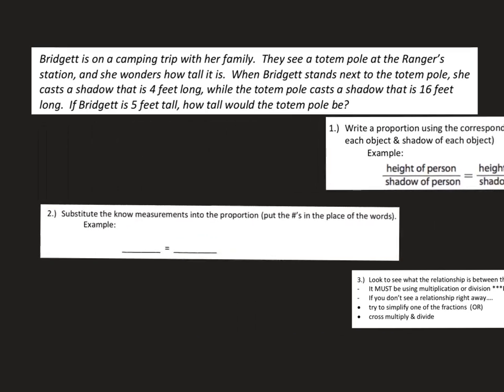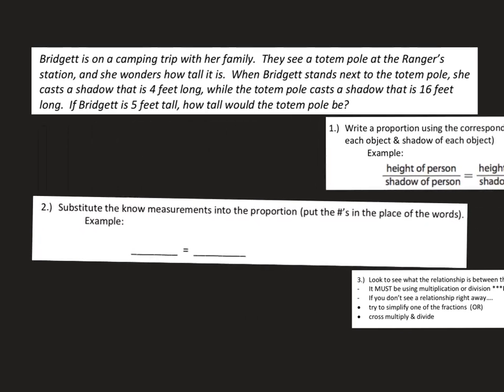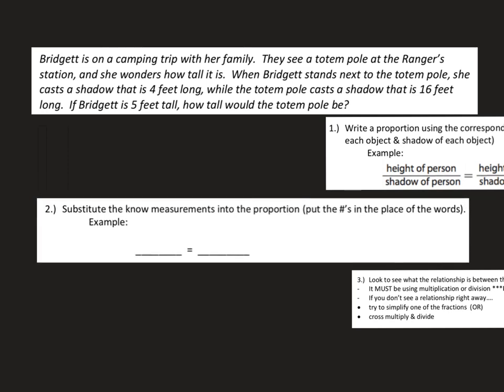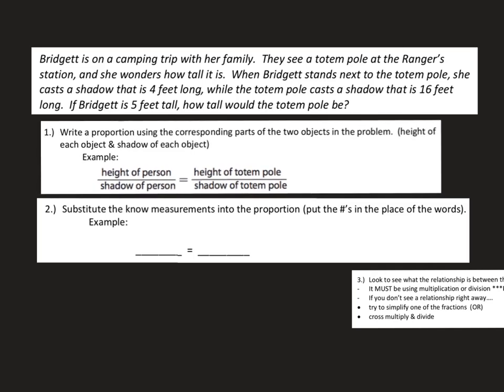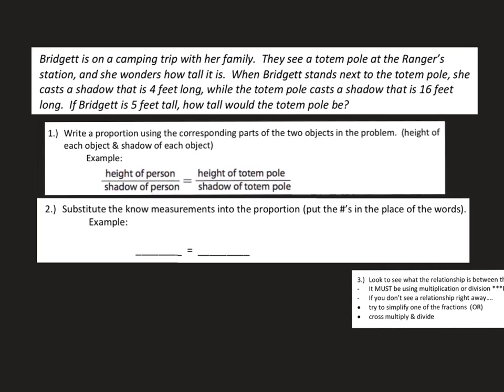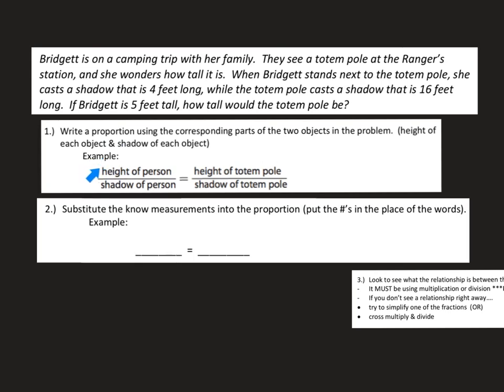Number two says, now you need to substitute the measurements into the proportions. So basically I'm putting the numbers in place of where the words went. I have person height on top. When we go look up in the story problem, the person's height, it says Bridget is five feet tall. So then I would put five and this is how tall she is.